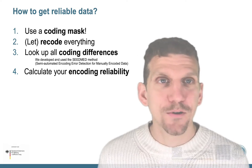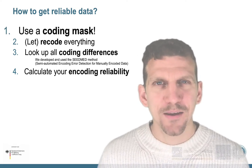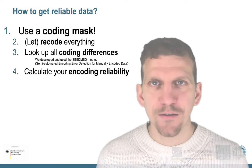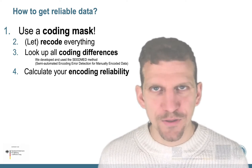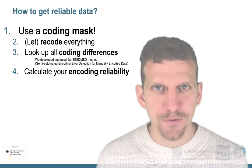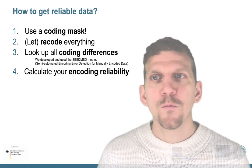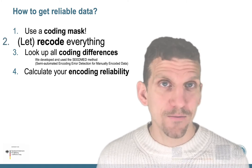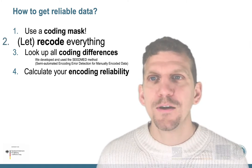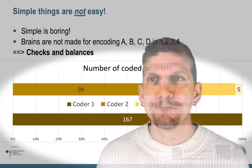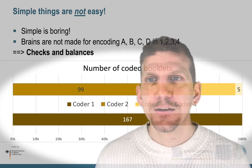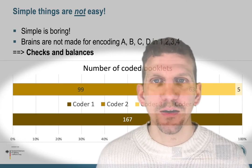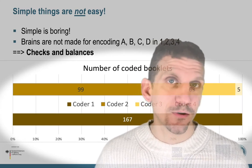First, we used a coding mask to make it really easy for coders — just type the data, hit enter, don't think about where to put it. Second, we had everything recoded; the number of coded booklets was recoded by actually four coders.